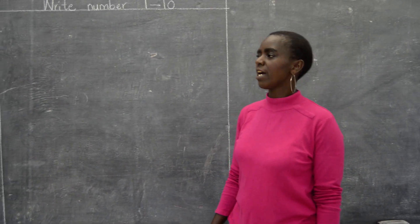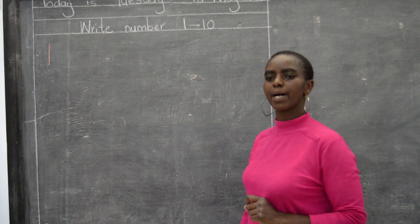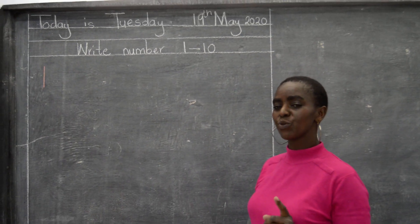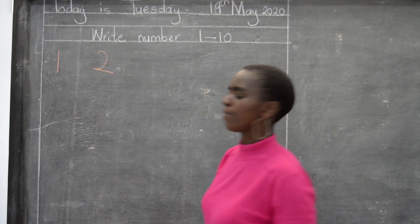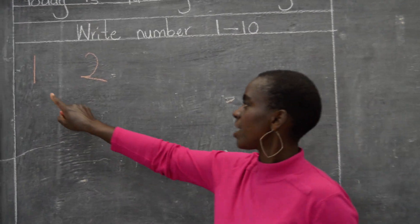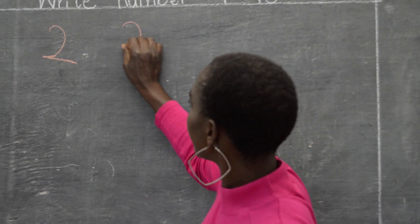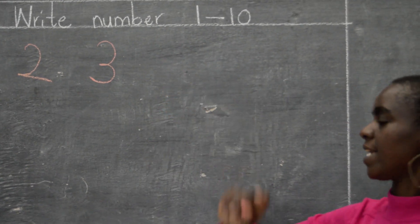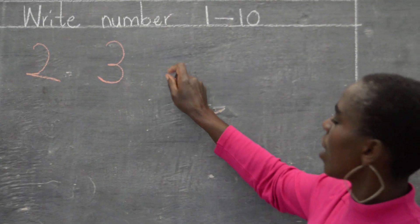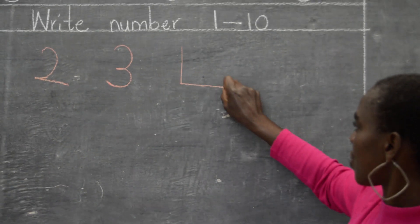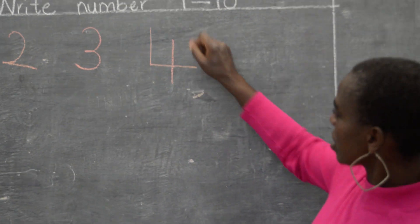Which number will I start with? I'll start with number 1. From number 1, you go to number 2. I write number 2. From number 2, you go to which number? We start saying 1, 2, then 3. I write number 3. We start again so that we go to the next number: 1, 2, 3, 4. And how do we write number 4? We write a stick across, then down. That's how we write number 4 — a stick across, down.